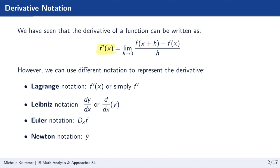Lagrange notation is the one we've been using — f prime of x. Or if we drop the full function notation, we can simply say f prime. So if you hear f prime, it means the derivative of the function f.